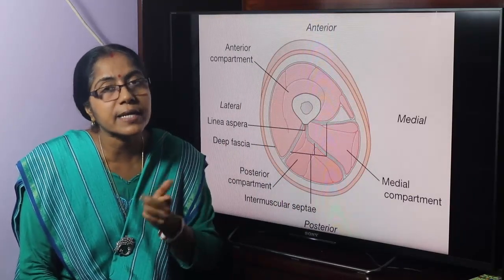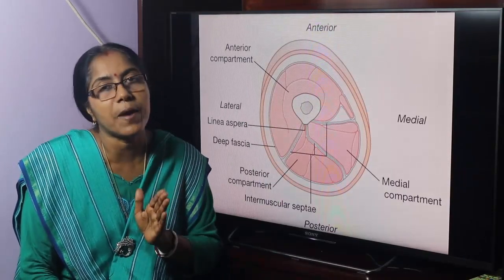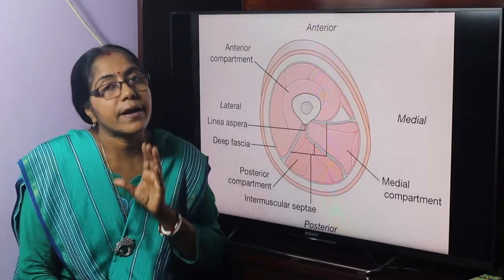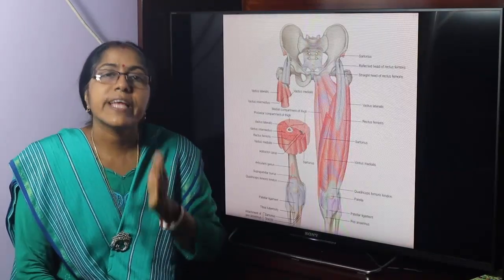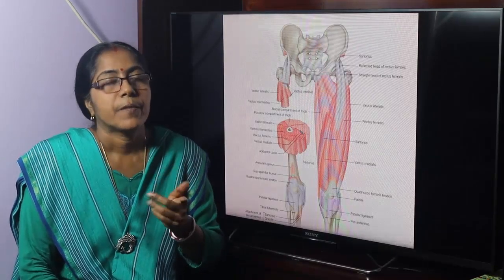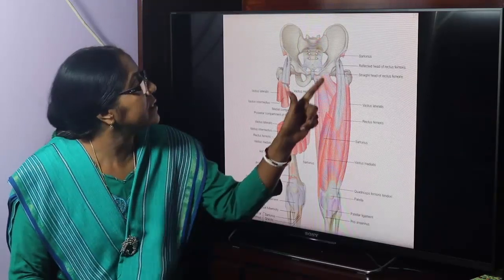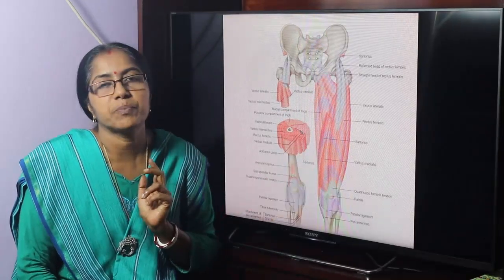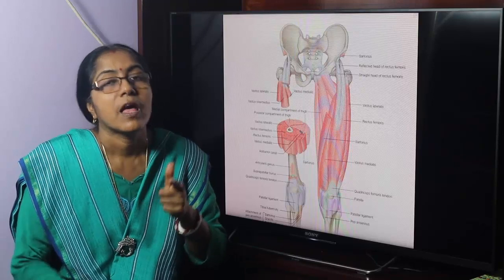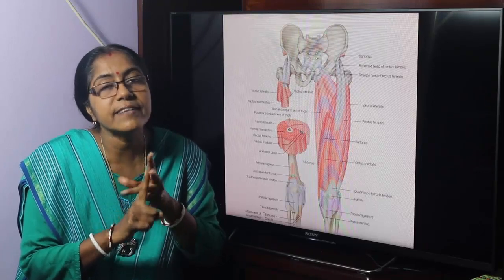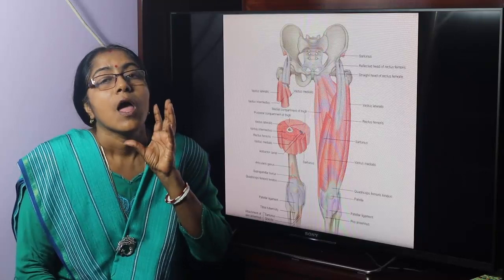The anterior compartment contains muscles, vessels, and nerves. What are the muscles? There is the sartorius and the quadriceps femoris. Quadriceps — quadri means four. There are four parts of quadriceps femoris: vastus lateralis, vastus medialis, vastus intermedius, and rectus femoris. These four muscles together constitute the quadriceps femoris.